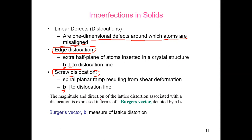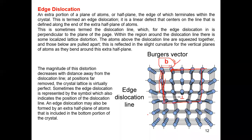The magnitude and direction of the lattice distortion associated with a dislocation is expressed in terms of the Burgers vector, written as B. The Burgers vector is a measure of lattice distortion and indicates the direction of the dislocation. For edge dislocation, the dislocation line and the Burgers vector are perpendicular.